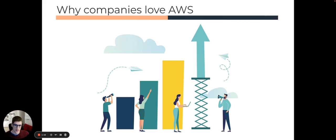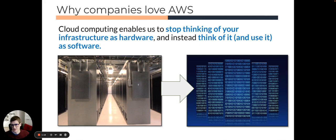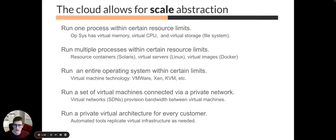AWS enables abstraction at a very exponential level. The abstraction is that you take away the server rooms that companies used to have as hardware, and you use it as software. If you want to double your capacity, you press a key and you have that available. The cloud allows for scale abstraction — you can run one process with virtual memory, virtual CPU, any number of containers, servers, or images, even entire operating systems or sets of machines on a network. And if you're a consultancy, you can deploy private architectures for each customer and copy-paste that infrastructure like a Git repo.